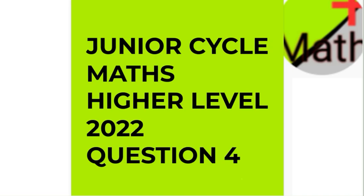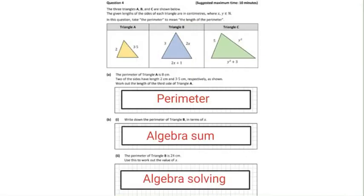Hello and welcome back to Maths Plus. Today we're covering the junior cycle maths paper of 2022 and we're on to question 4. Let's have a quick look at the exam question. The first part we're going to work out the missing link here given the perimeter. That's pretty straightforward.